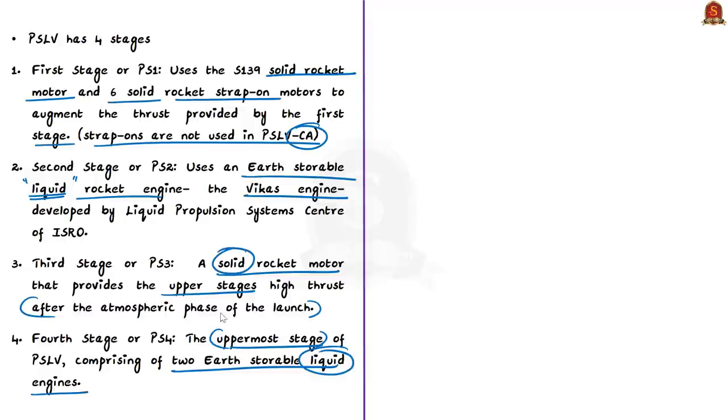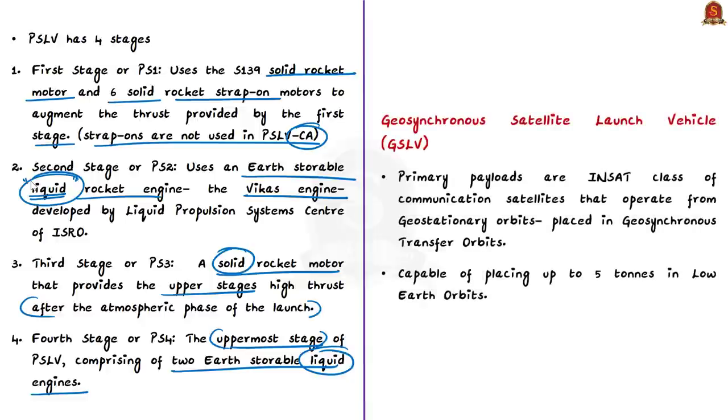Now, let us see about Geosynchronous Satellite Launch Vehicle or GSLV. GSLV's primary payloads are INSAT class of communication satellites that operate from geostationary orbits. They are placed in geosynchronous transfer orbits by the GSLV. Further, GSLV's capability of placing up to five tons into low earth orbits broadens its scope of payloads from heavy satellites to multiple smaller satellites.